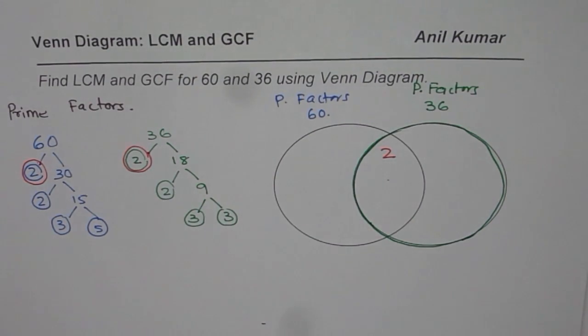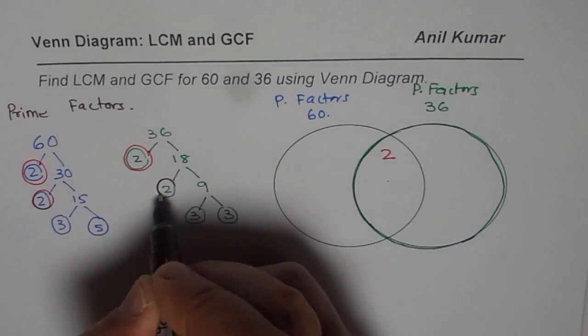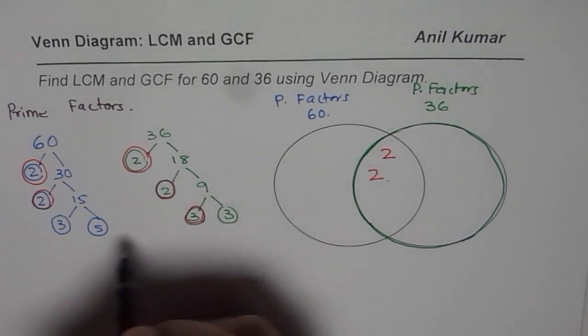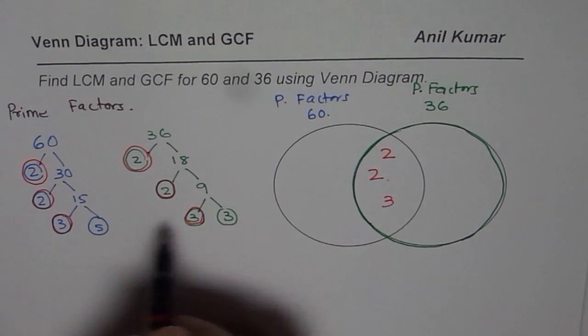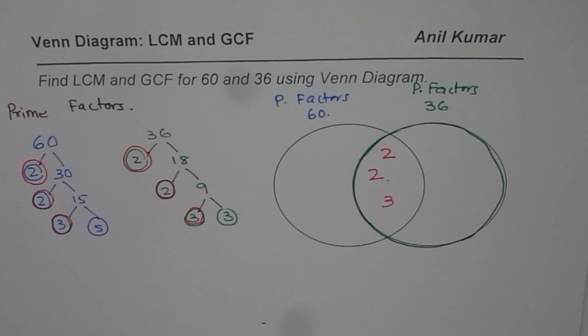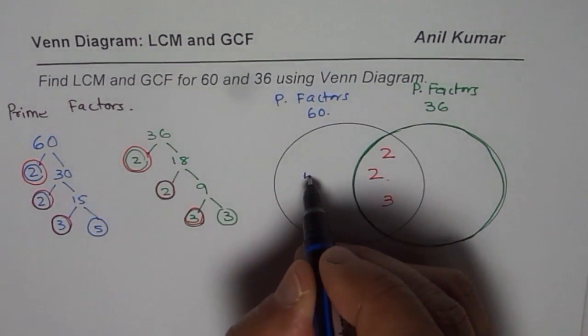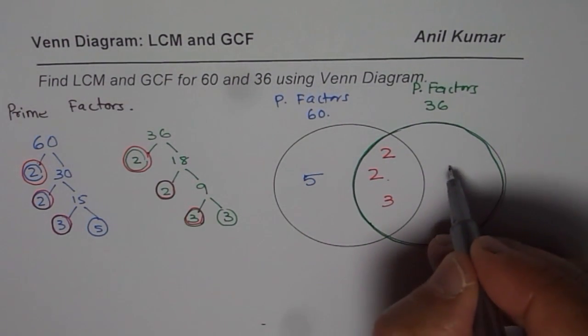So, 2 is common. We have placed 1, 2 there. Another 2 is common. We will place this also here. And then 3 is also common. So we will place this 3 here. 5 and this 3 are not common. So we will place them in their own respective circles. 5 in 60. And this 3 in 36.